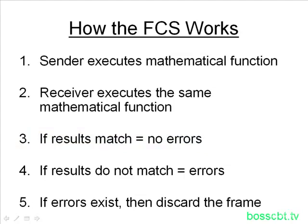However, if the receiver has different results after running the function, then it knows something changed — and since the only thing that can change is the frame itself, there must be an error. Errors are then determined to exist in that frame. Once that happens, Ethernet knows it has to discard the frame. That's the action it takes when errors exist — it simply discards it.